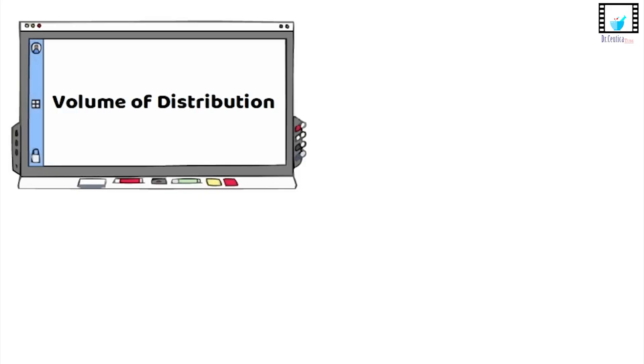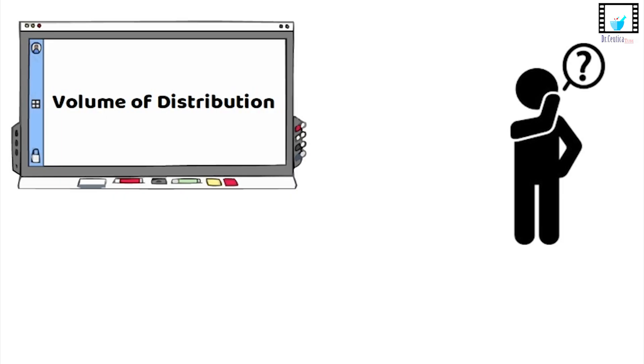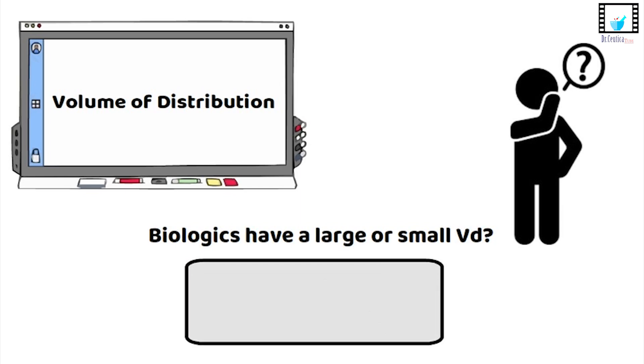And that's a wrap on volume of distribution. But before you go, do you think biologics would have a large or small VD? Drop your answer in the comments. I'll be watching.